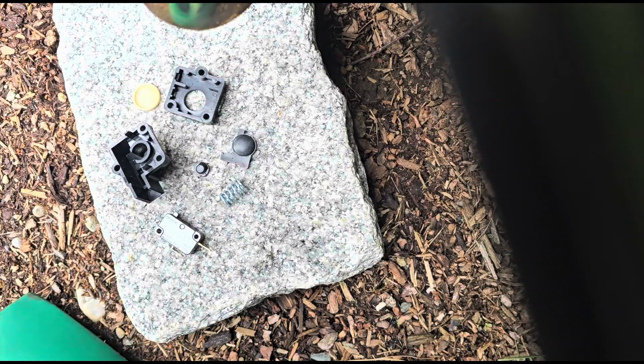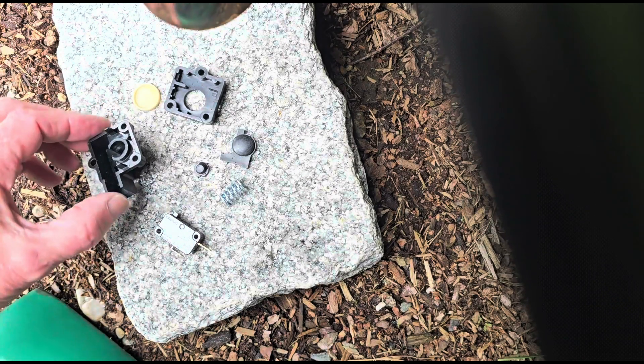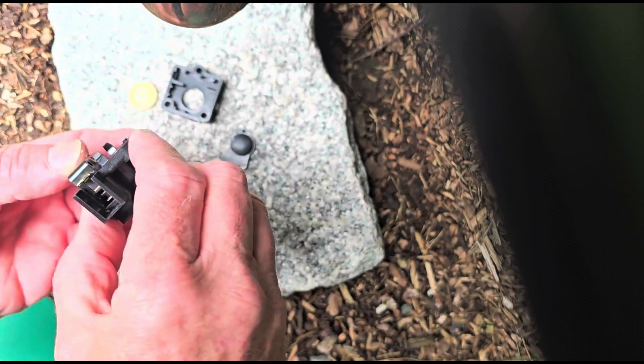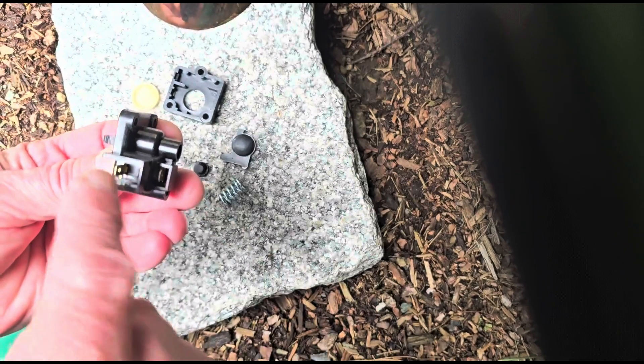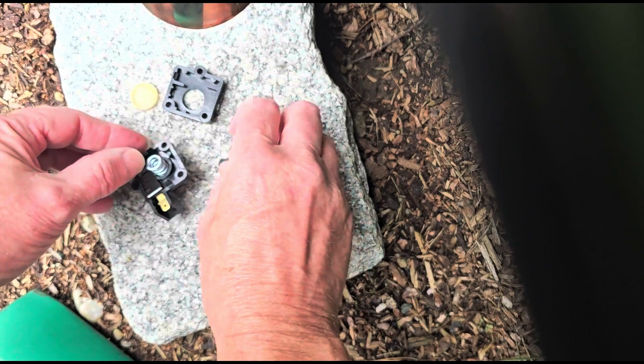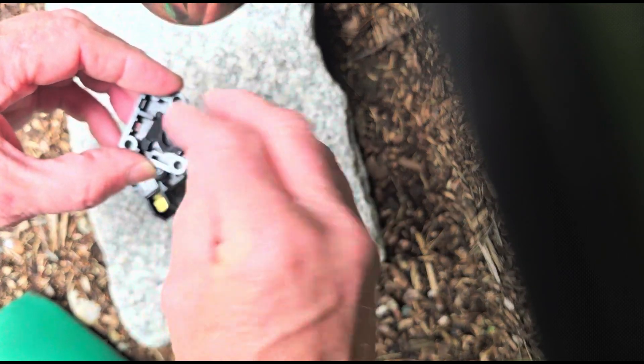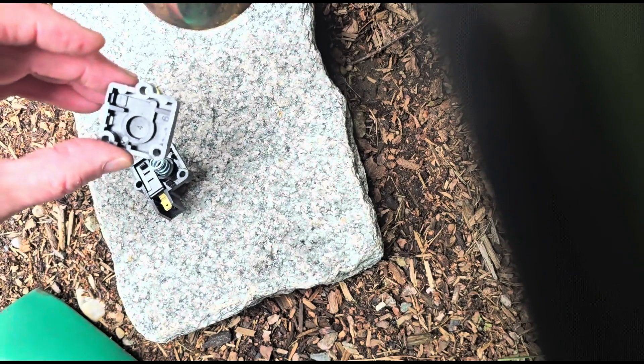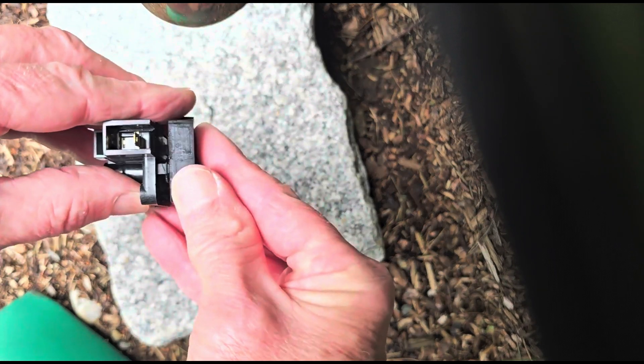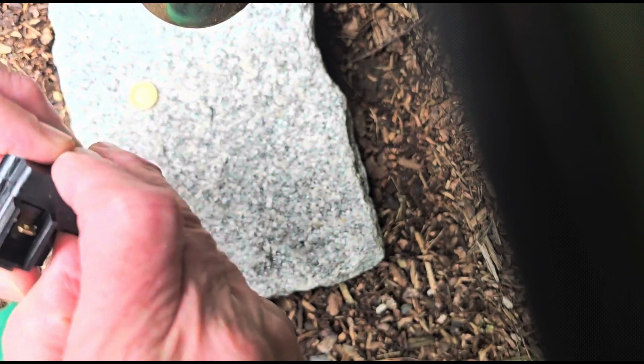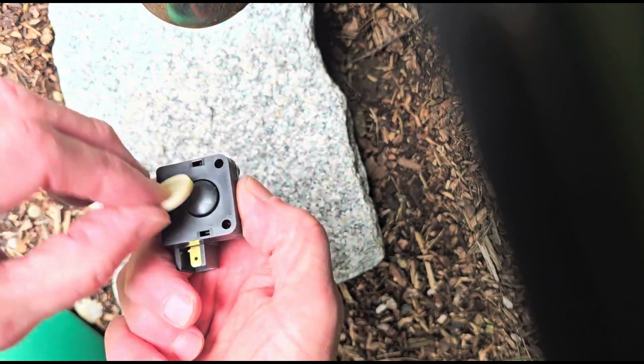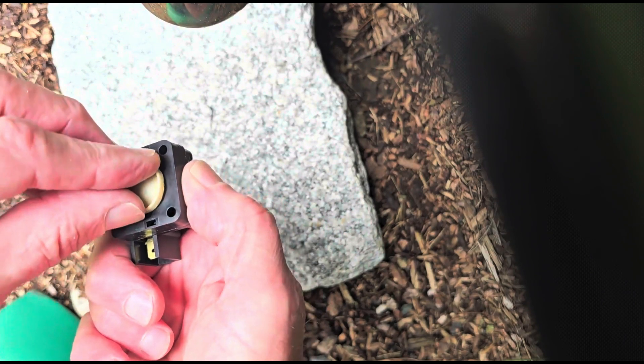Here are all the pieces to the switch assembly. The new micro switch is going to go right into this cavity like that. This little piece goes there with the spring, and then on the other half this piece goes like that and then just line these up and they should snap together.